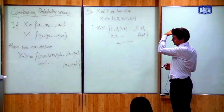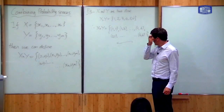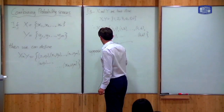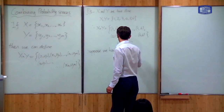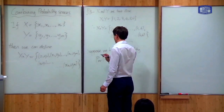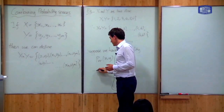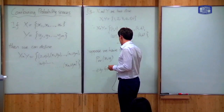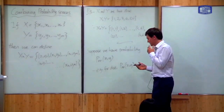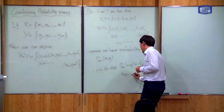We can combine probabilities of events like this. Suppose we have a joint probability distribution — a probability on the product space — written as P_{XY}(x, y). For dice, if these are fair dice, the answer is always the same: the probability of any outcome is 1 over 36, where X and Y can take any values between 1 and 6.